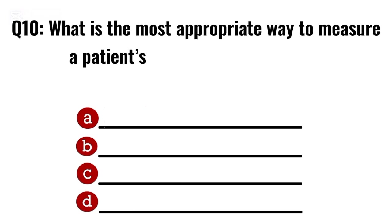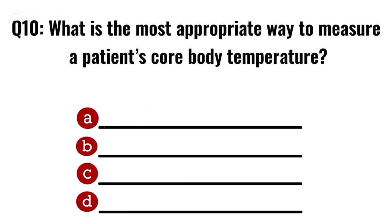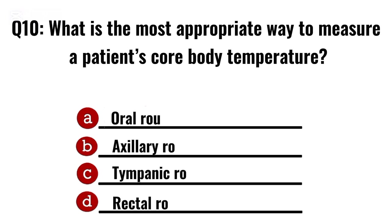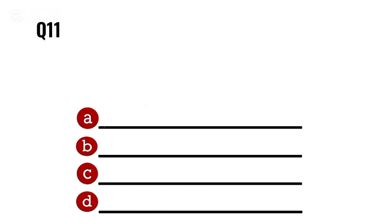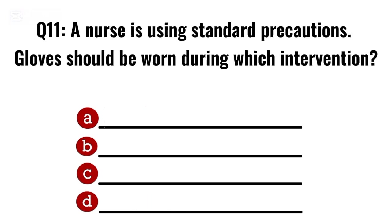Question 10. What is the most appropriate way to measure a patient's core body temperature? Correct option D: Rectal route.